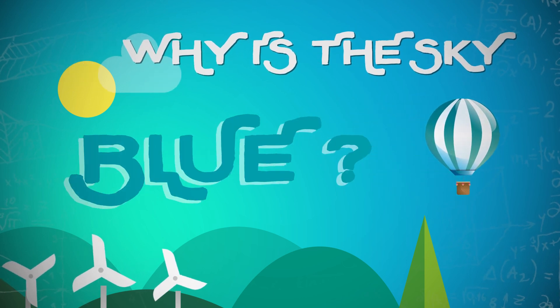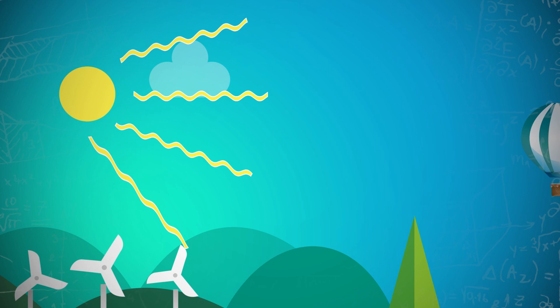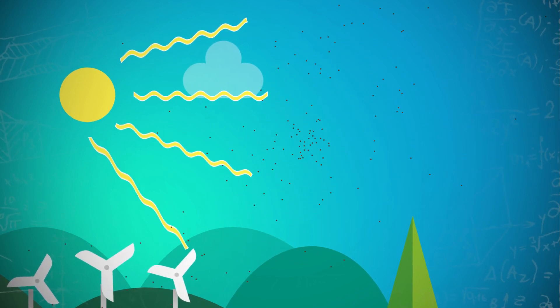To understand why the sky is blue, we have to understand the nature of the sunlight and how it interacts with gas molecules and particles in our atmosphere.